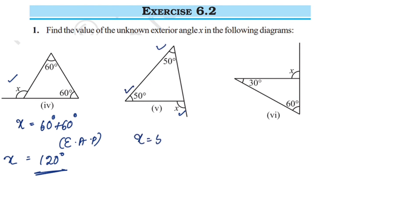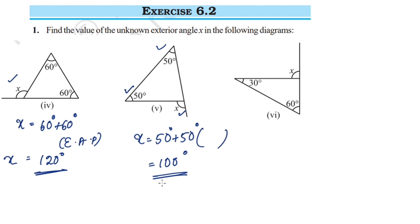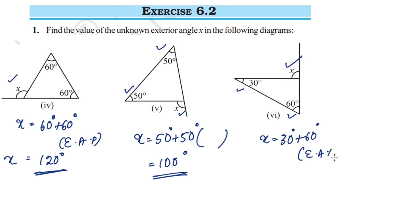X is equal to 50 degrees plus 50 degrees, which is equal to 100 degrees. You can write the exterior angle property here. X is equal to 30 degrees plus 60 degrees. Using the exterior angle property, x is equal to 90 degrees.